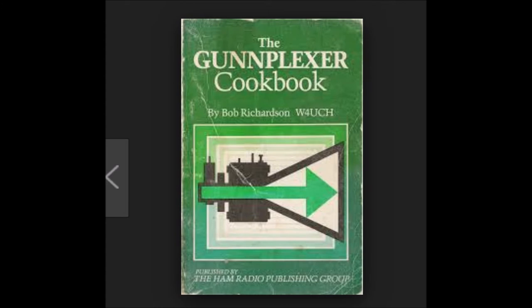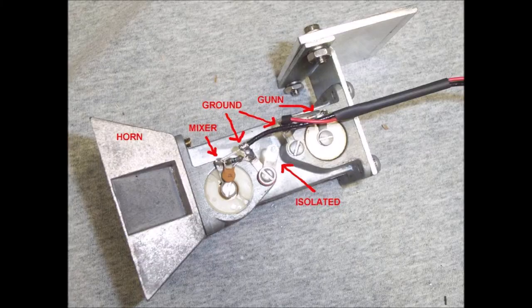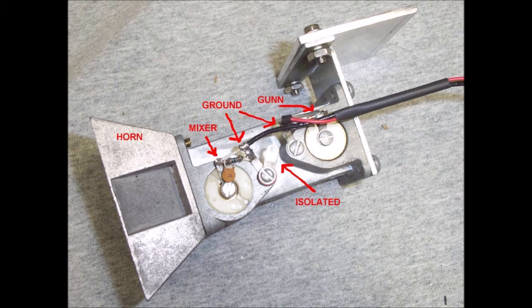Gunn plexer. The Gunn plexer system is a combination of a microwave oscillator based on the Gunn diode with a mixer, a Schottky diode. In the Gunn plexer, operating at 10 GHz and at higher frequencies, the entire microwave system is embedded in a waveguide and the antenna, usually horn-type, completes the system.